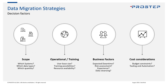Now let's look at decision factors for choosing a migration strategy. First, understand the scope: which systems need migrating, what data types are involved, what is the quantity, how will data be exported and imported, and what is the overall migration time given those numbers. This drives the decision — if migration simply takes too long, Big Bang is not viable and you must go incremental.